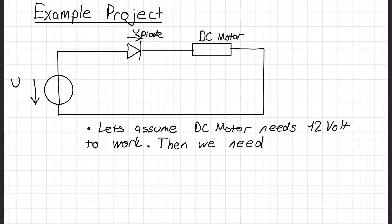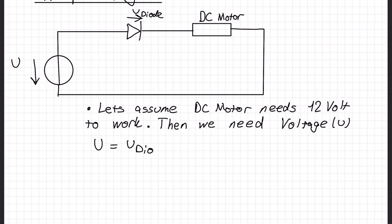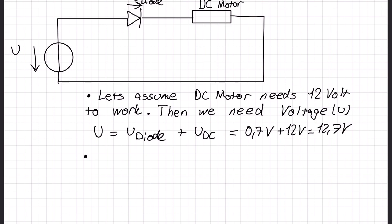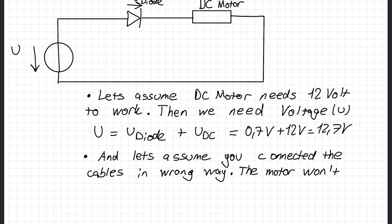So then we will need a higher voltage source than 12 volts, which is voltage drop of diode plus voltage drop of DC motor, which is at least 12.7 volts. And let's assume we connect the plus side and ground side of our voltage source in a wrong way. What should happen is the motor shouldn't be spinning. Actually the motor won't spin because diode lets current only in one direction.